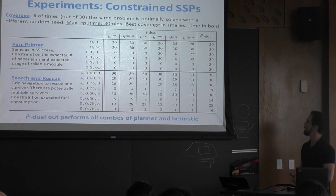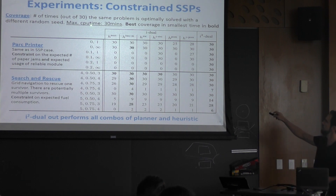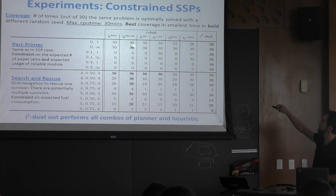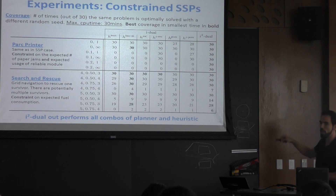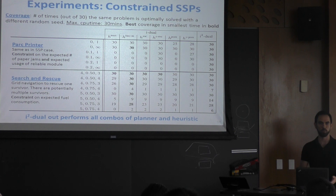In experiments, comparing last year's IDUAL against the new I2DUAL across different heuristics — deterministic heuristics using determinization, probability-aware heuristics from the first part, heuristics aware of both probabilities and costs, and the fully integrated algorithm — I2DUAL dominates all other combinations.